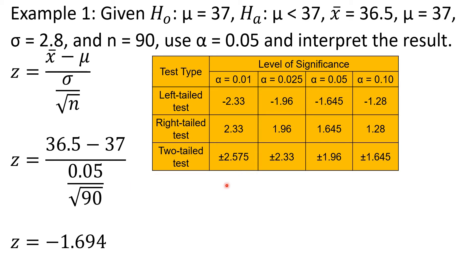For step 3, we have to identify the critical Z value. The computed Z value is negative 1.694. We will be using the Z table. Since the alternative hypothesis tells us that the population mean is less than 37, example 1 is a left-tailed test. From the left-tailed test and the alpha of 0.05, we can see that the critical Z value is negative 1.645.